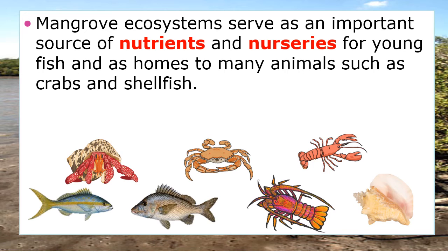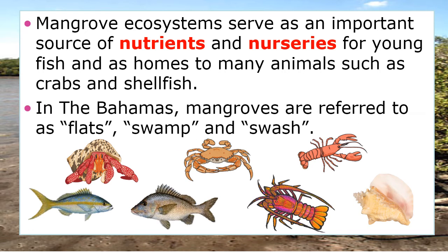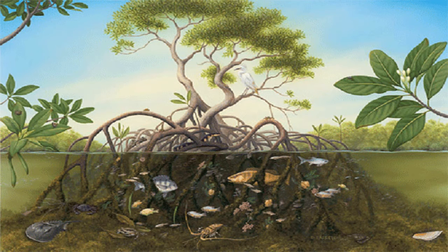The mangrove ecosystem serves as an important source of nurseries and nutrients for young fish, and as home to many animals such as crabs and shellfish. In the Bahamas, mangroves are referred to as flats, swamps, and swoosh. Here is a red mangrove with prop roots, and you will see animals under the roots and also birds on top of the mangroves.